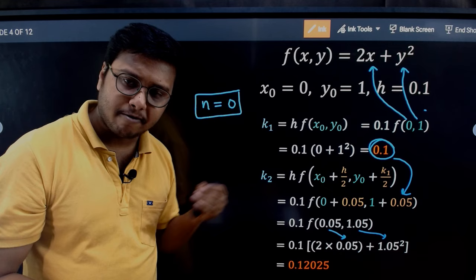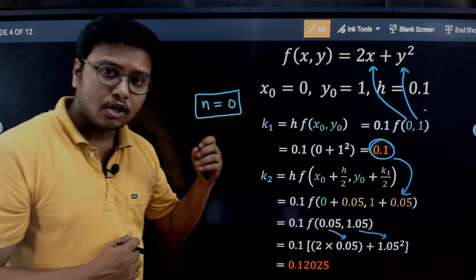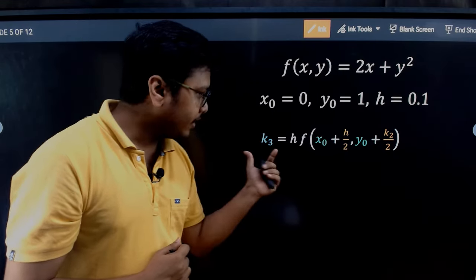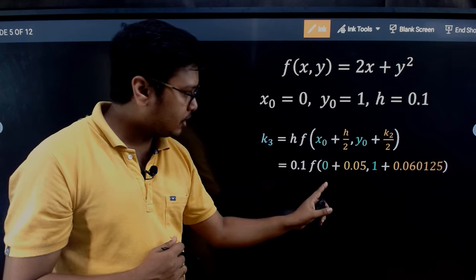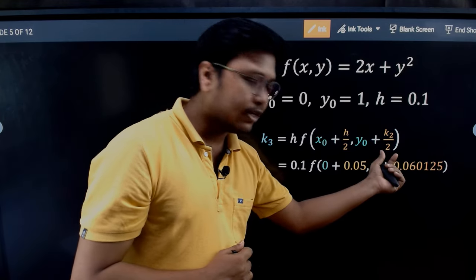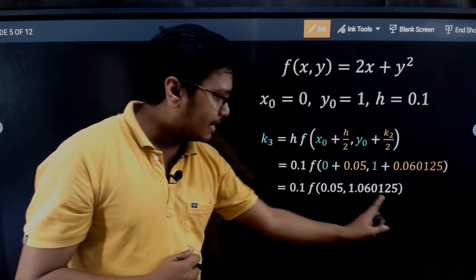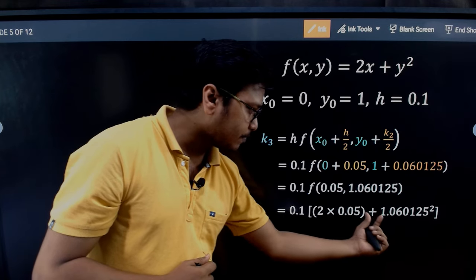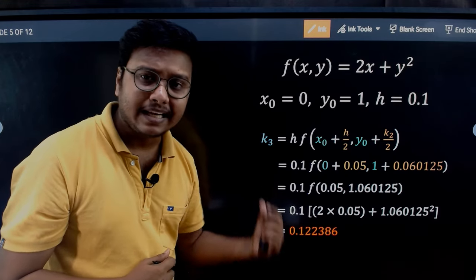You can pause the video here, use the formulas, and find k3, then check your answer. For k3, we use the value of k2. x0 is still 0, y0 is 1, h/2 = 0.05, and k2/2 is half of the k2 value we just found. Plugging those into f(x, y) = 2x + y² gives us the value of k3.